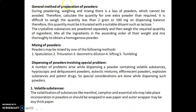Here is the general method of preparation of powders. During powdering, weighing, and mixing, there is a loss of powder which cannot be avoided. Therefore, calculate the quantity for one extra powder than required. It is difficult to weigh quantities less than 2 grains or 100 milligrams — as 1 grain equals 60 milligrams — on a dispensing balance; therefore this quantity must be triturated with a suitable diluent such as lactose. Crystalline substances are powdered separately, then weigh the required quantity of all ingredients, mix in ascending order of weight, and mix thoroughly to obtain a homogeneous powder.